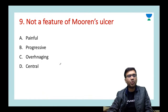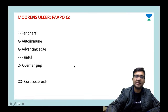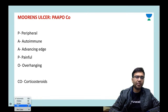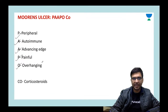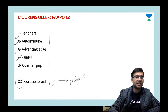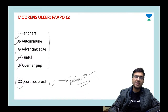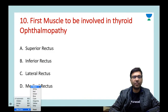Next question: what is NOT a feature of Mooren's ulcer? Options: painful, progressive, overhanging, or central. The answer is D — central. Mooren's ulcer is a peripheral ulcer. Remember the mnemonic PAPPO-CO: P = peripheral, A = autoimmune, P = advancing edge, P = painful, O = overhanging edges, CO = corticosteroids (these patients are responsive to corticosteroids and immunosuppressants).